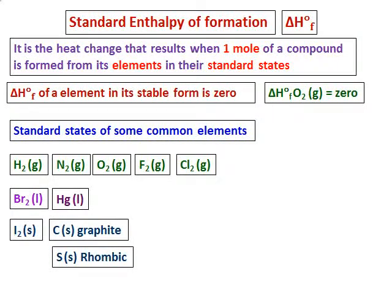You need to know the standard states of common elements. Hydrogen, nitrogen, oxygen, fluorine, and chlorine are stable as diatomic molecules in the gas state. Bromine and mercury are the only two liquids. Iodine is diatomic but solid. Carbon is solid, with its standard state being graphite. Sulfur is solid, with its standard state being rhombic sulfur.